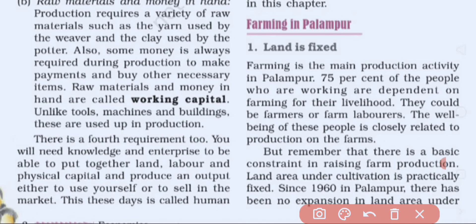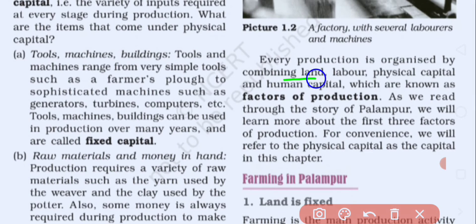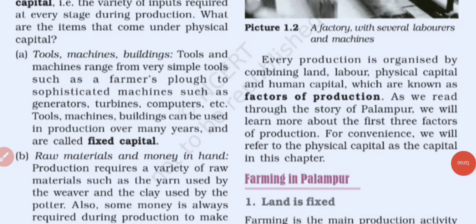The fourth and most important factor of production is the entrepreneur, or human capital, who with his knowledge and enterprise puts together land, labor, and physical capital to produce for himself or for the market. So it is clear that for every production we need the four factors: land, labor, physical capital, and human capital, and with the help of the story of village Palampur we will discuss all four.